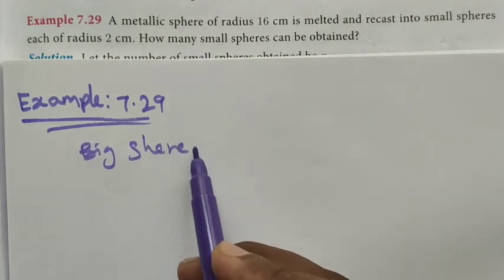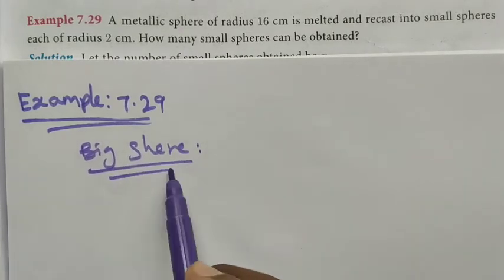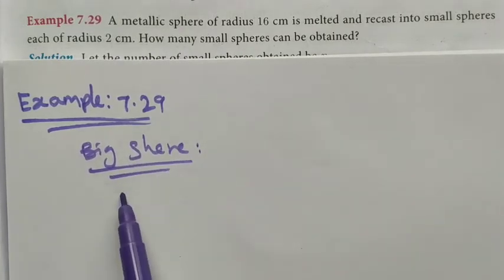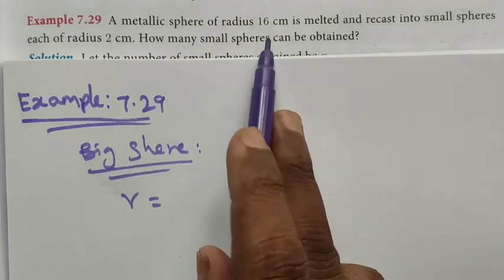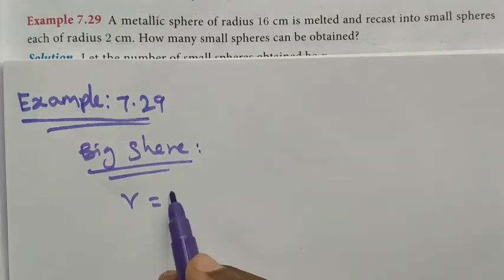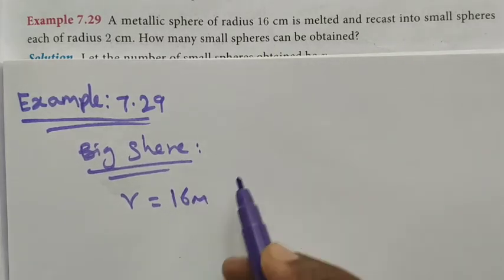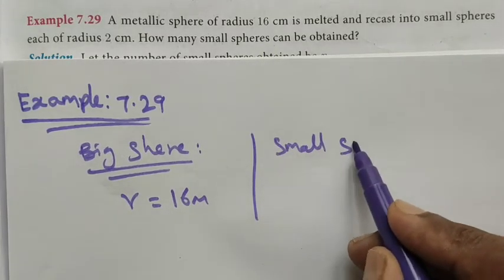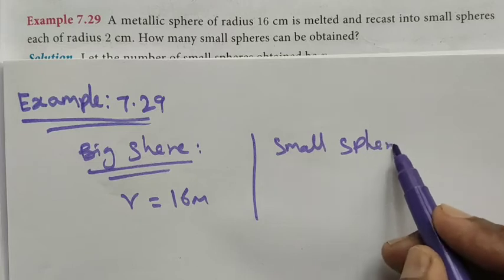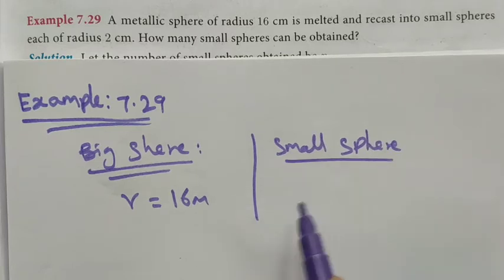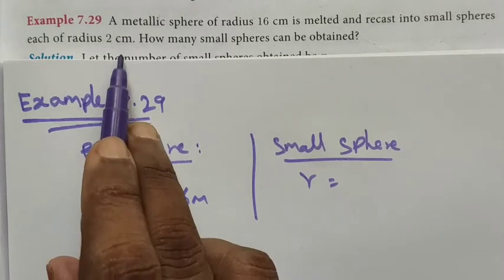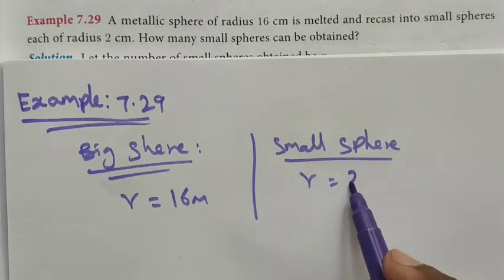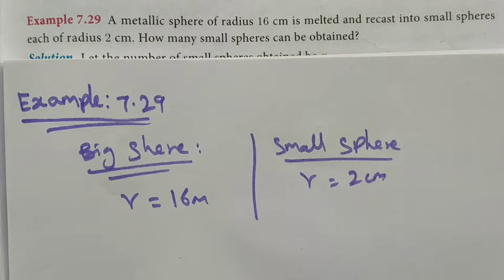The bigger sphere has radius R equal to 16 centimeters, and the small sphere has radius r equal to 2 centimeters. We want to find how many small spheres can be obtained.